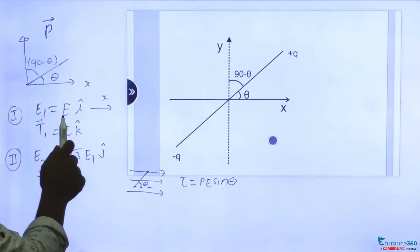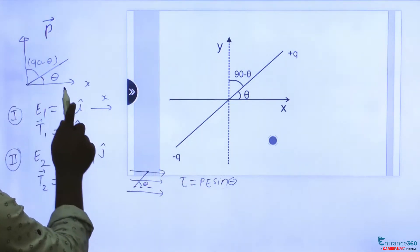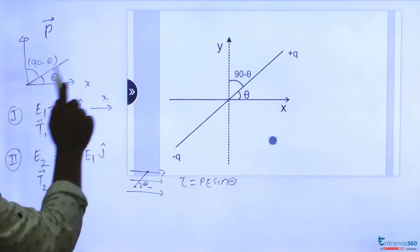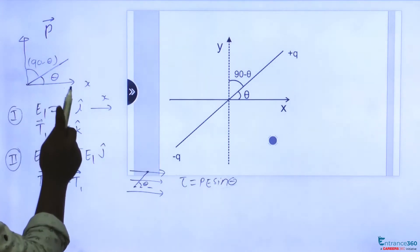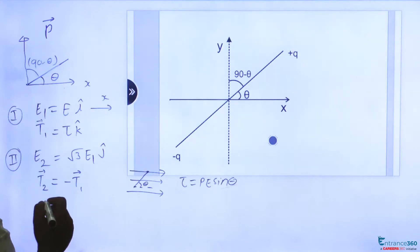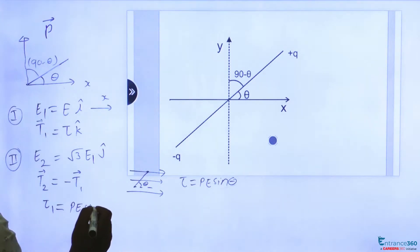So when E₁ is in x direction and dipole moment is making angle theta with the x-axis, then we can write torque 1 equal to simply PE sin theta.